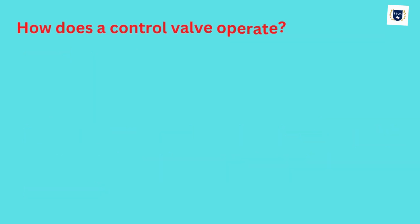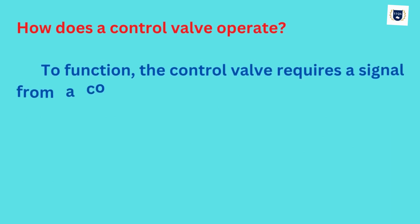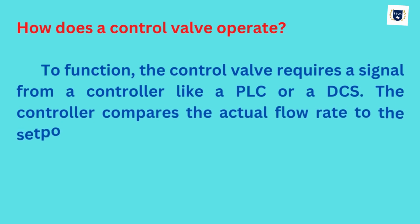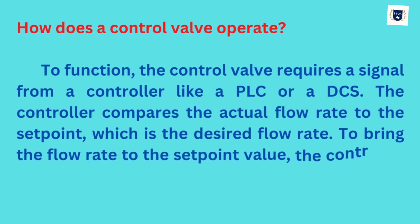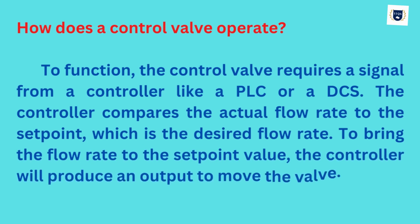How does a control valve operate? To function, the control valve requires a signal from a controller like a PLC or a DCS. The controller compares the actual flow rate to the setpoint, which is the desired flow rate. To bring the flow rate to the setpoint value, the controller will produce an output to move the valve.